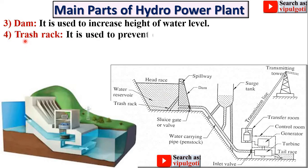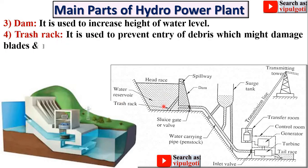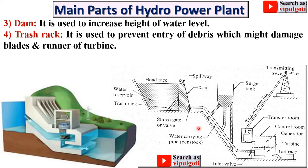Now the next part is the trash rack. Here you can see the trash rack. It is used to prevent entry of debris which might damage the blades and runner of the turbine. Here you can see this is the turbine on which blades are mounted. So the trash rack is used to prevent debris from the water reservoir from reaching the turbine.